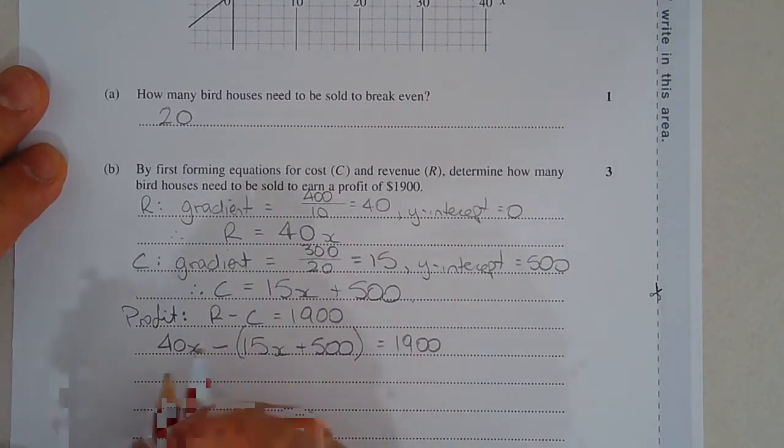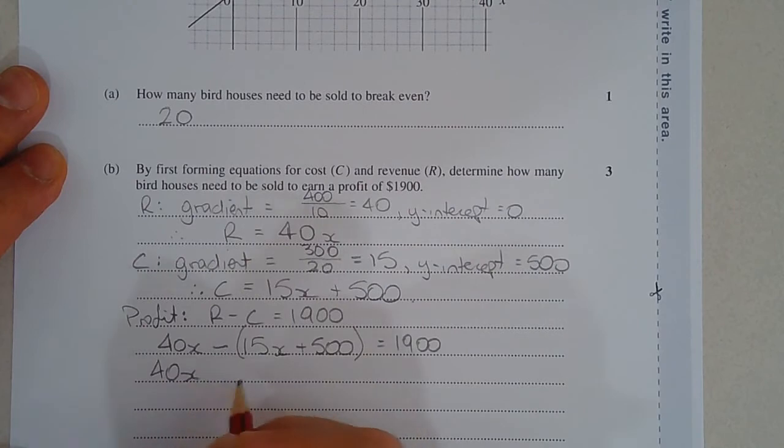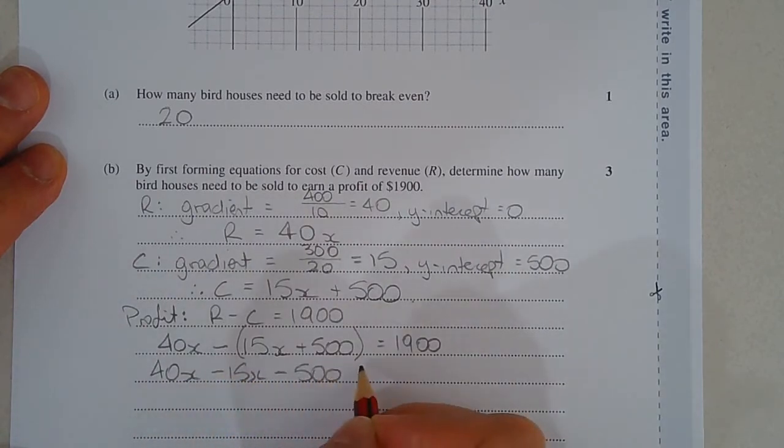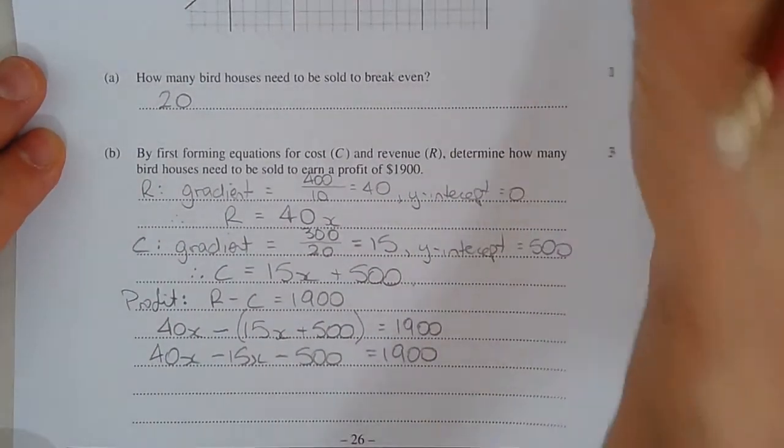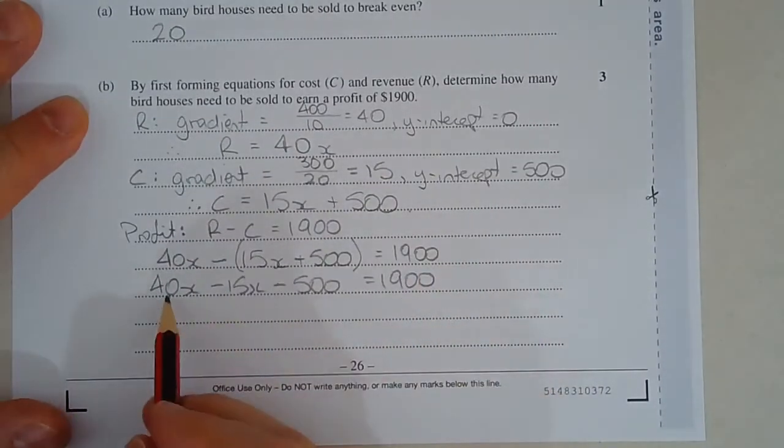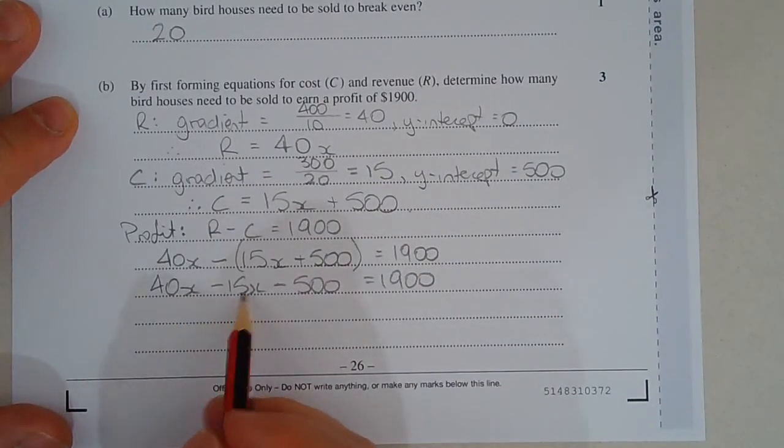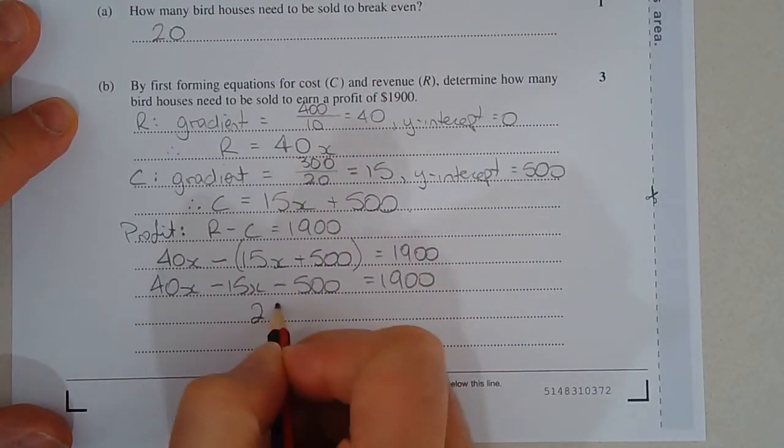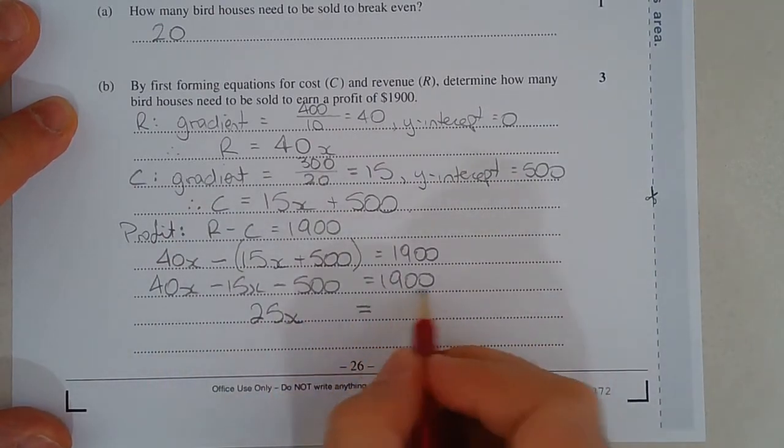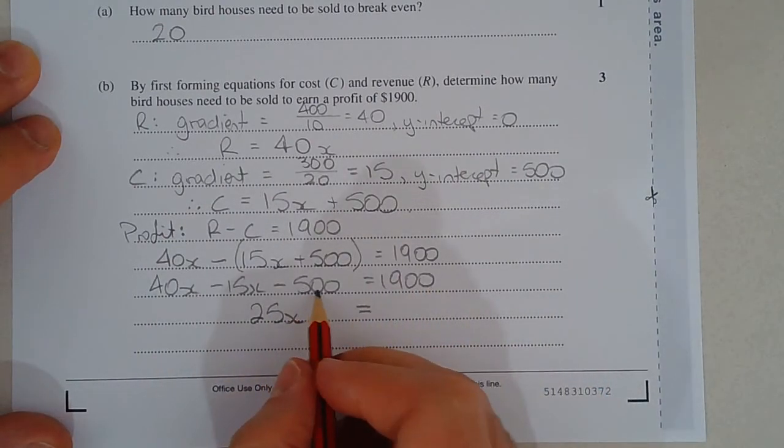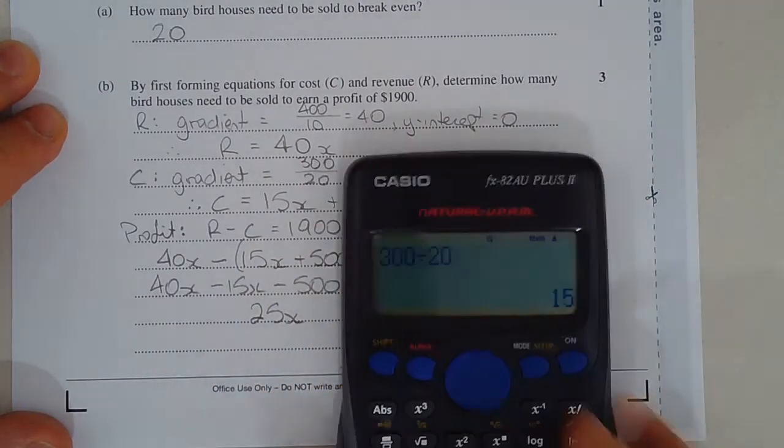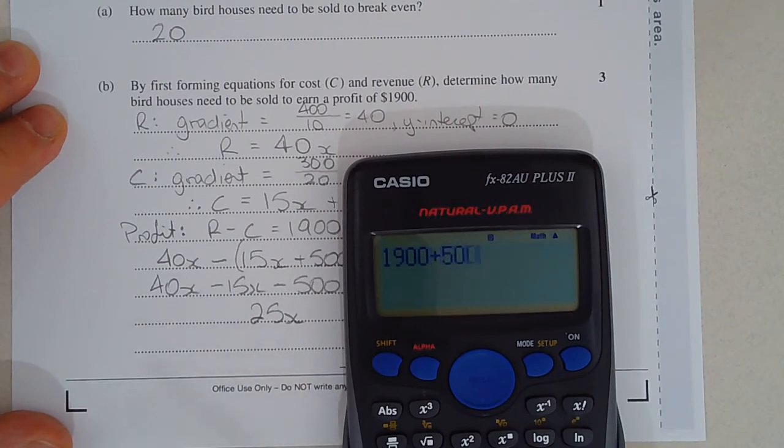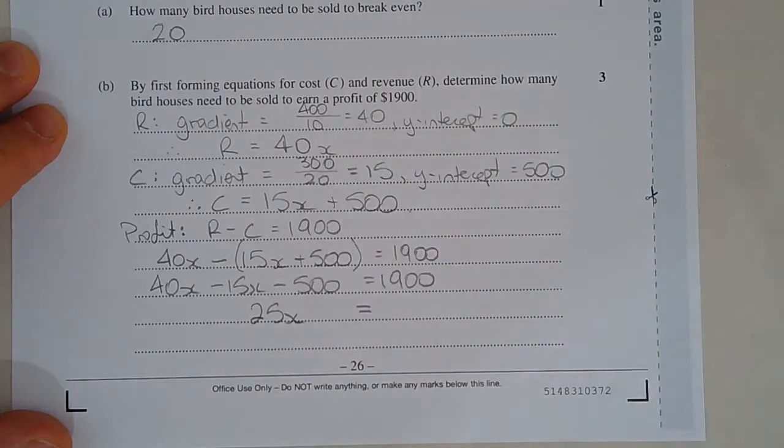Let's now expand the brackets. 40x minus 15x minus 500 is equal to $1,900. Let's now combine the like terms. 40x minus 15x is 25x. And 1,900 plus 500. So this 500 is going to move over. And I'm going to get 1,900 plus 500 should be 2,400.